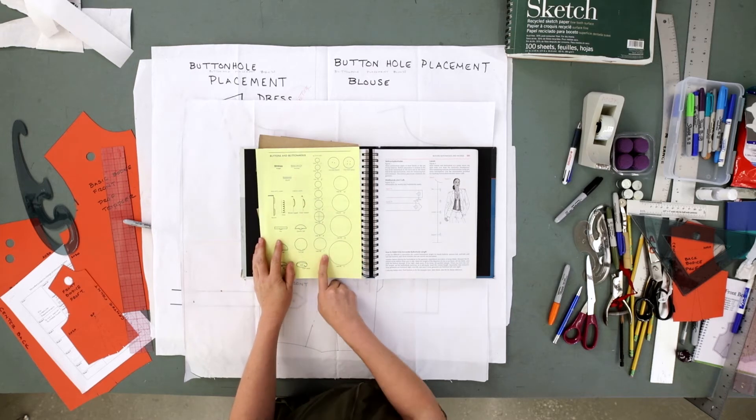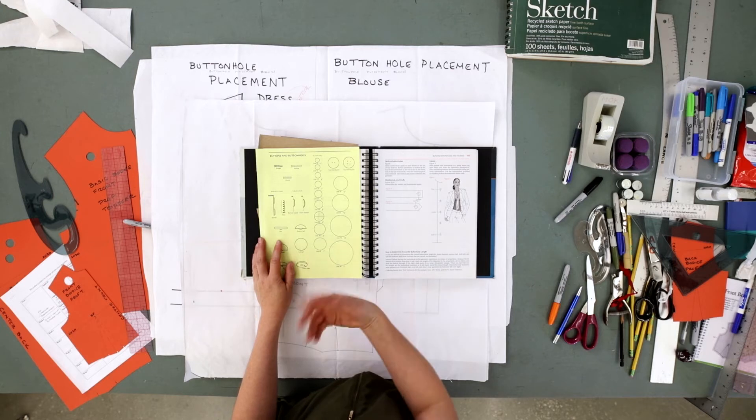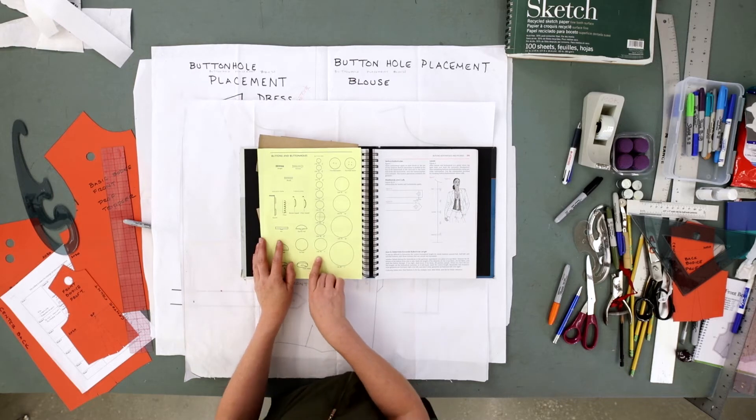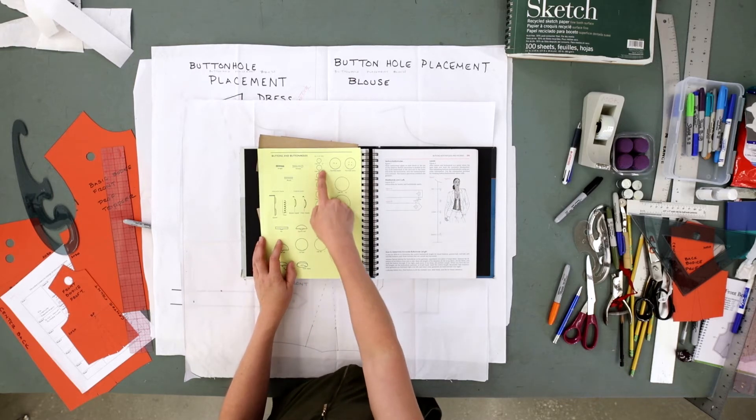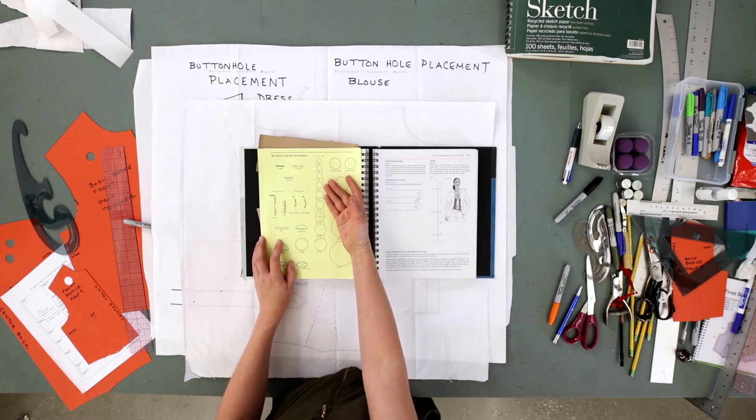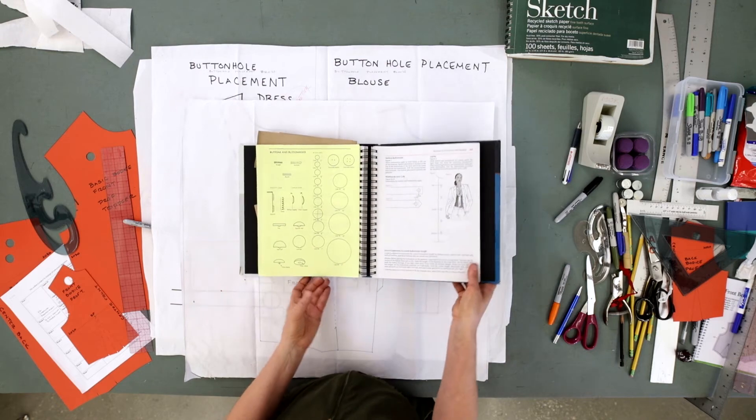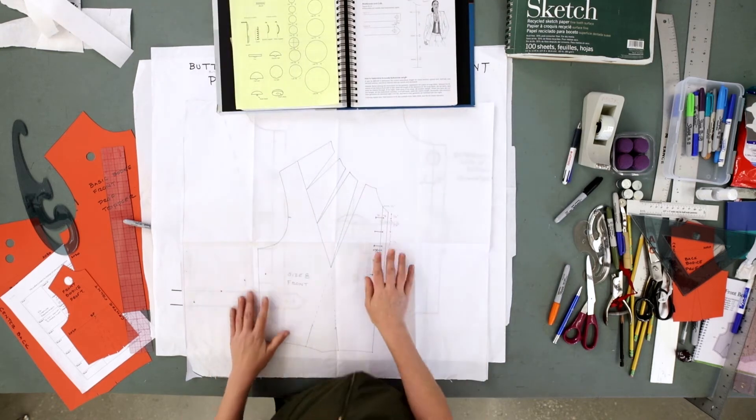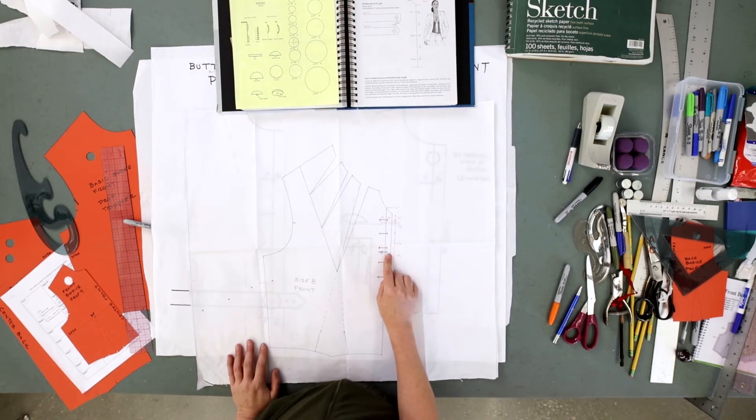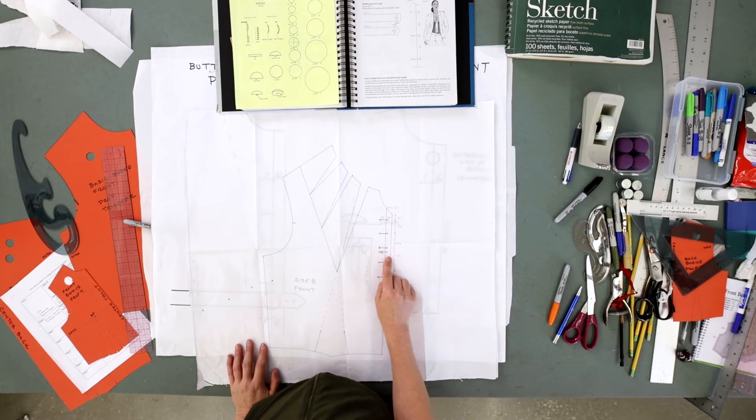Whatever the size of your button, the line corresponds to how big the button is. A one-inch button, for example, is the equivalent of a 40-line button. A quarter-inch button is the equivalent to a 14-line button. Whatever the size of the button is, you want to make sure that your button extension will accommodate it.